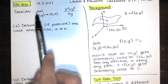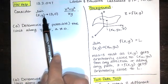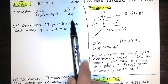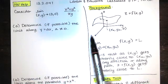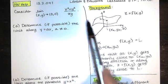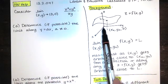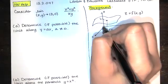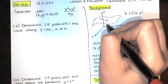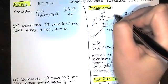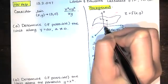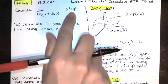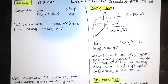The problem says: consider the limit as (x, y) approaches (0, 0) of this function. We don't know exactly what this looks like — maybe it looks something like this — and we're saying as x and y get closer to the origin in the x, y plane. So x and y are approaching 0 and 0. The question is, what happens to that function as (x, y) approaches (0, 0)?